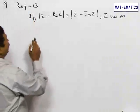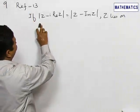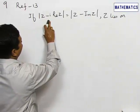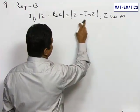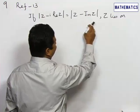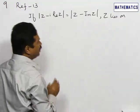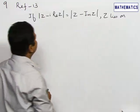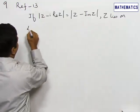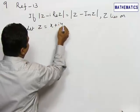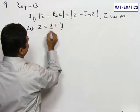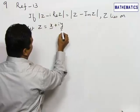Let us refer to question number 13. It is given that modulus of z minus i times real of z equals modulus of z minus imaginary of z, where z lies on... Here we have to take care that if a complex number z equals x plus iy, then the real of z is x and imaginary of z is y.